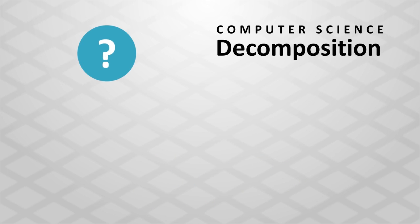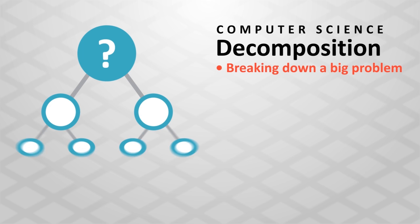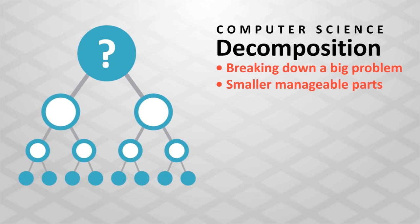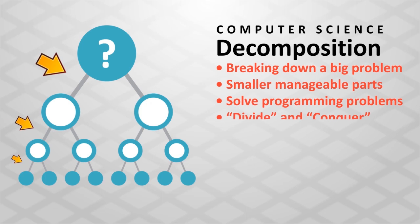In computer science, decomposition is the process of breaking a big problem into smaller, manageable parts. Although decomposition is a proven technique for solving programming problems, this divide-and-conquer methodology can also be used to solve other everyday types of problems.